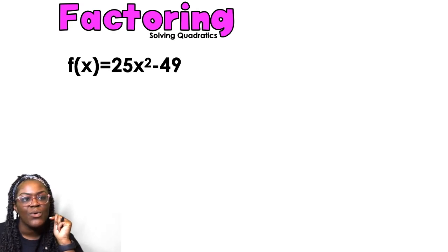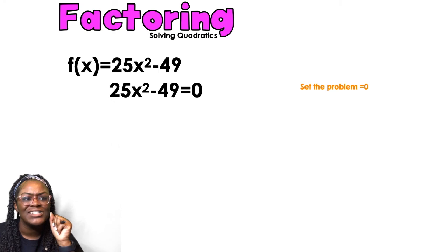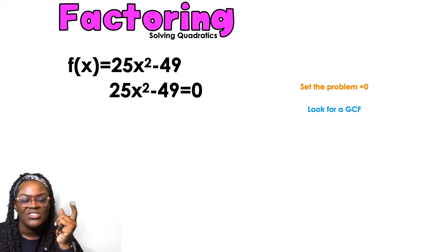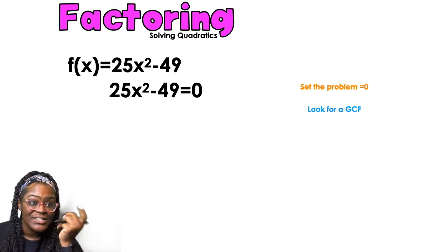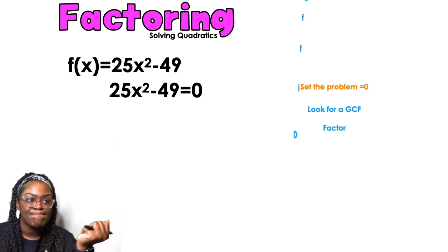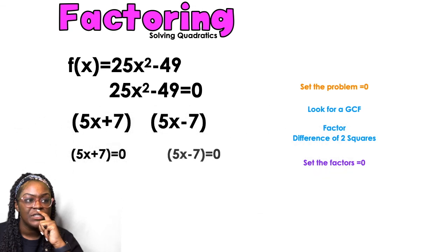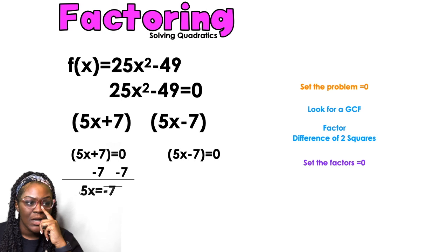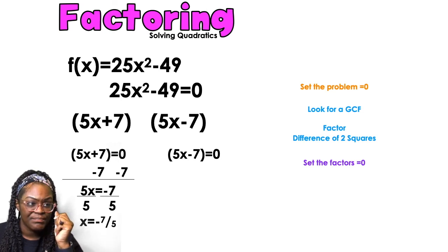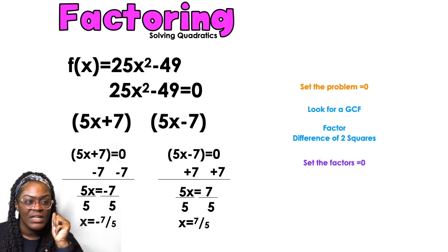Last example: f(x) = 25x² - 49. Set equal to zero. No GCF. This is neither a = 1 nor a > 1 in the typical sense — it's a difference of two squares. Factor as (5x + 7)(5x - 7) = 0. Set each factor equal to zero: 5x + 7 = 0 gives x = -7/5; 5x - 7 = 0 gives x = 7/5. Solutions: {-7/5, 7/5}.